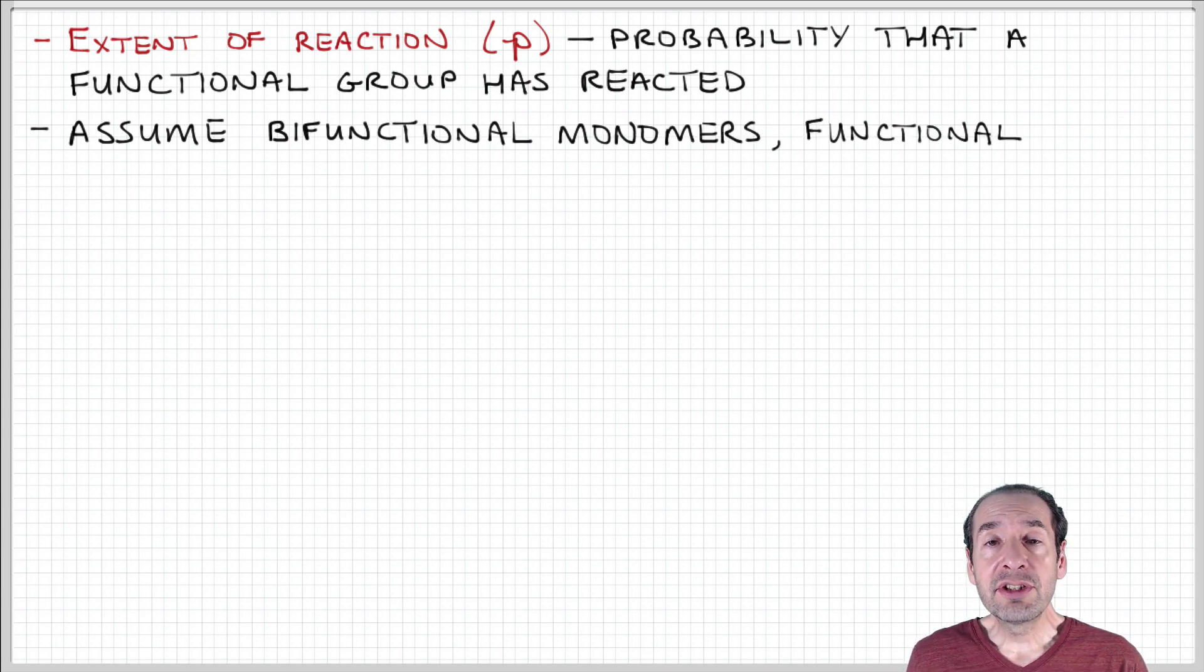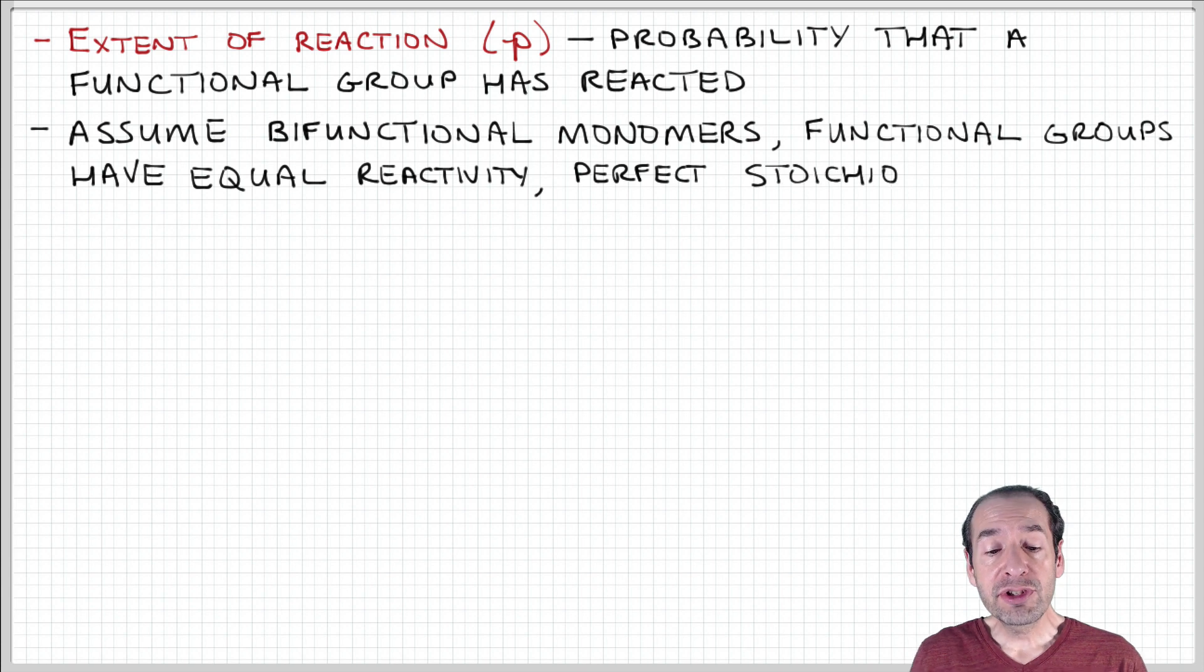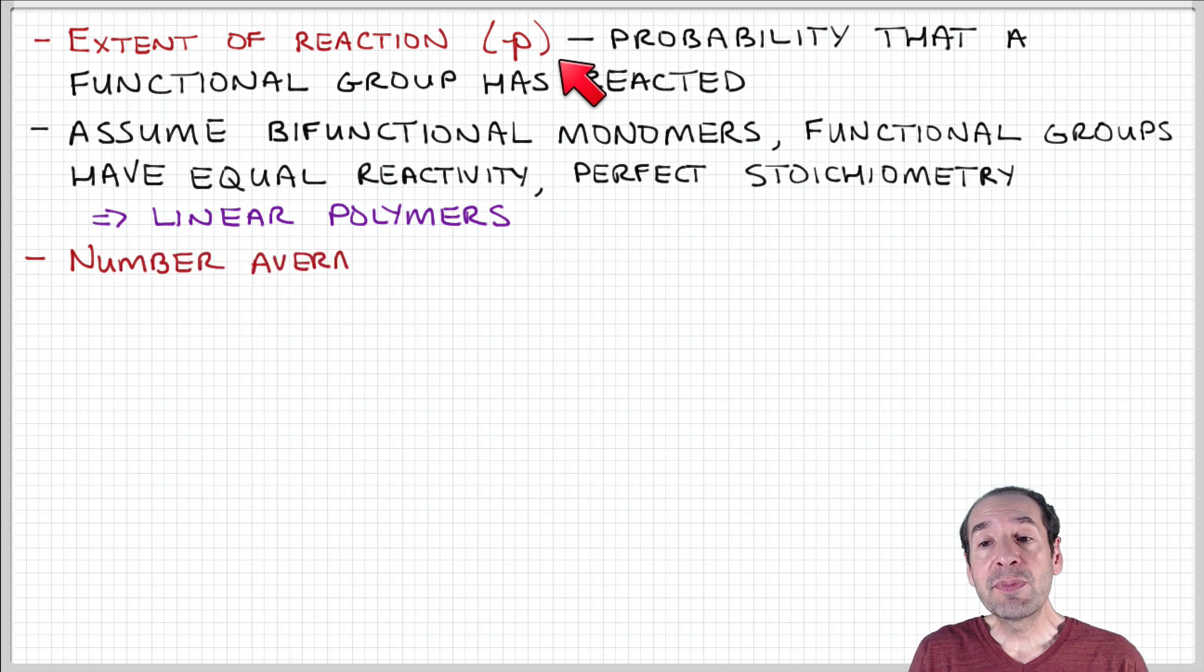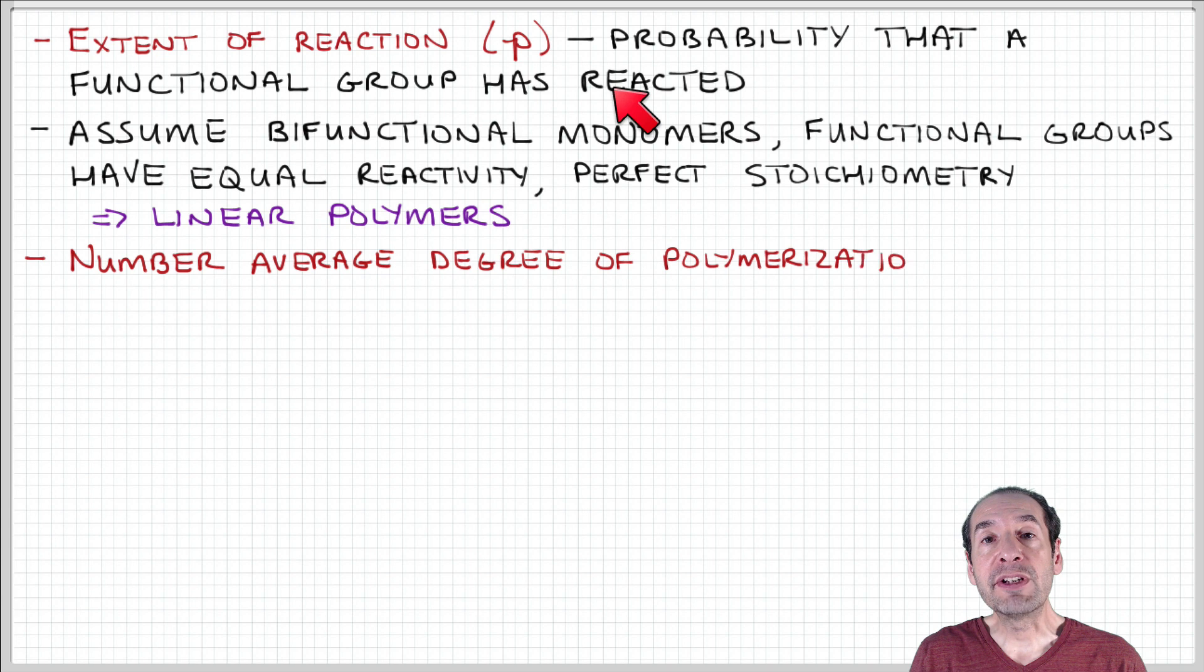Now let's take a closer look at how we can determine the degree of polymerization for a step growth process. First, we're going to define a parameter called the extent of reaction, abbreviated by the lower case p. This parameter expresses the probability that a functional group has reacted.